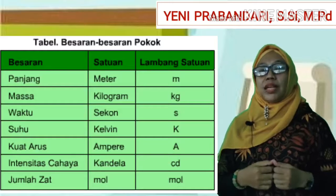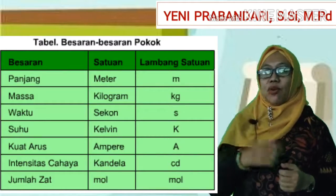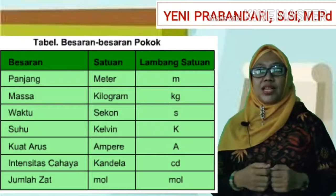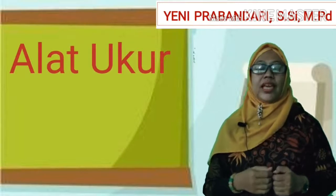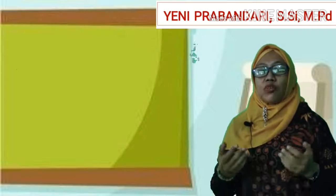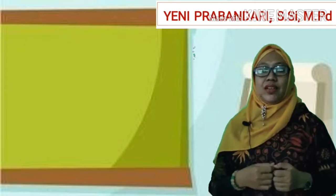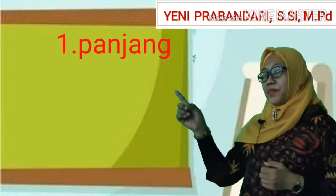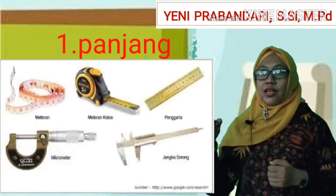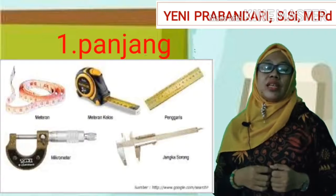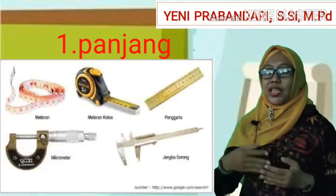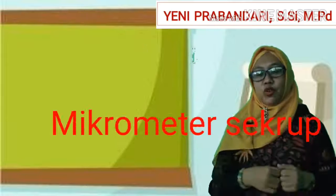Berikut ini adalah tabel bagaimana hubungan antara besaran pokok dengan satuan internasional. Bisa dilihat di sini. Sekarang tentang alat ukur. Alat ukur adalah alat yang digunakan untuk mengukur suatu besaran. Untuk besaran pokok panjang, alat ukurnya mulai dari mistar atau penggaris, lalu ada rollmeter, kemudian ada jangka sorong, lalu ada mikrometer sekrup. Ini disebutkan dari yang ketelitiannya rendah sampai ketelitiannya tinggi. Yang paling teliti yaitu mikrometer sekrup.